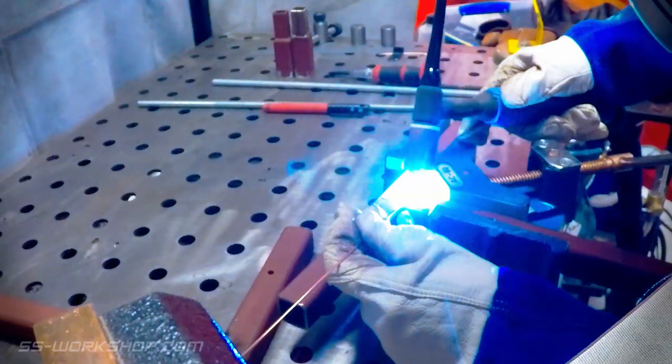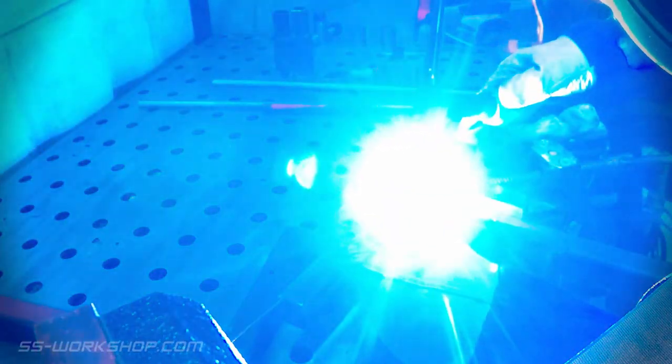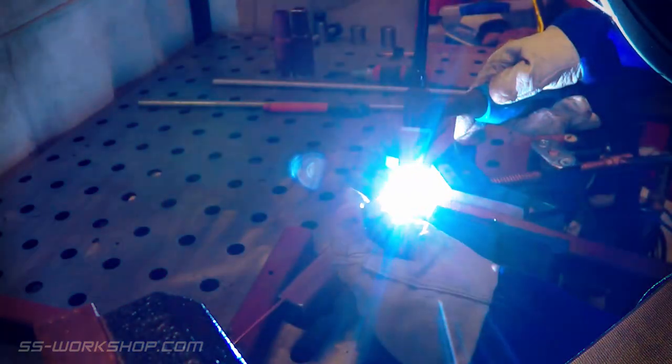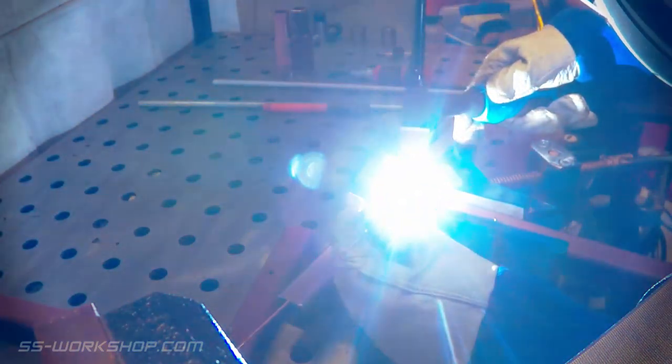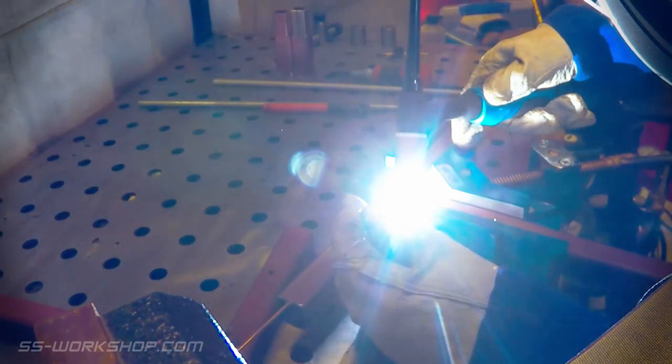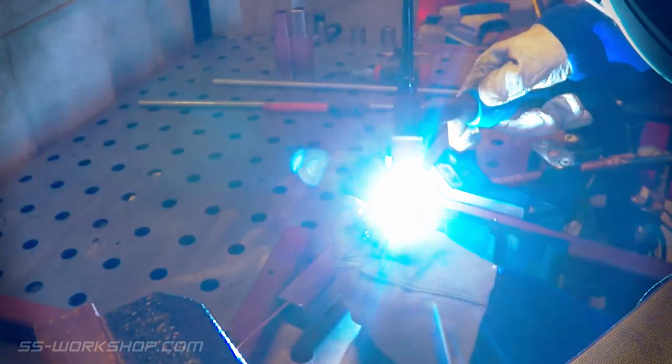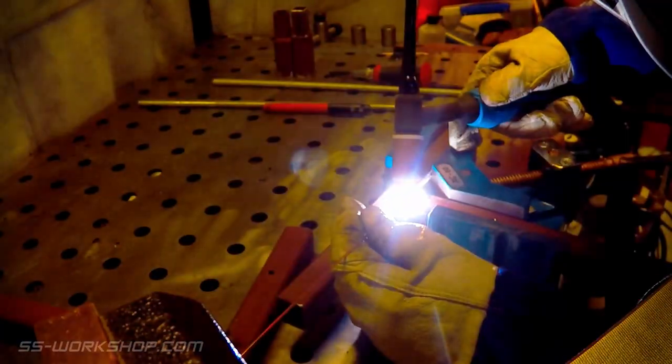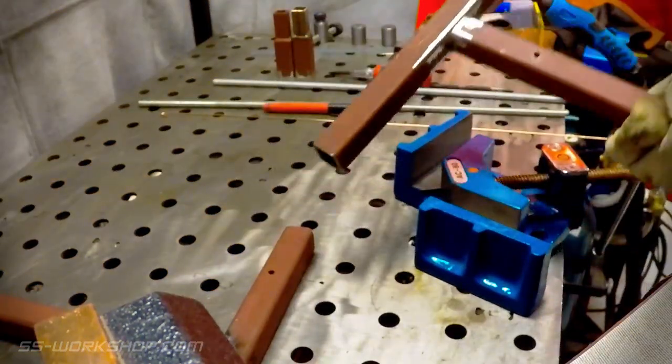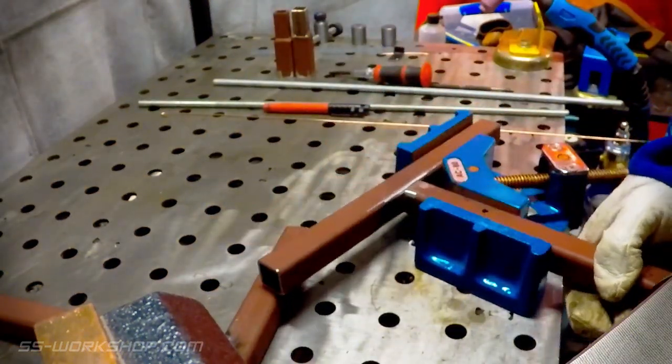The parts ready, I clamp them up and start welding. I'm using the TIG welder today, it's always good to get an opportunity to practice. I could have equally used a MIG welder or even bolted these parts together. I'm using a 90 degree welding clamp today as it's a quick way to get everything square.